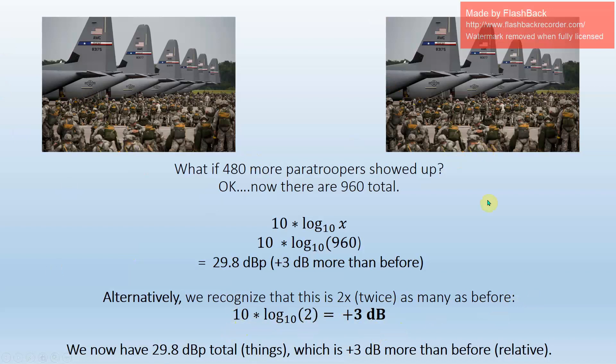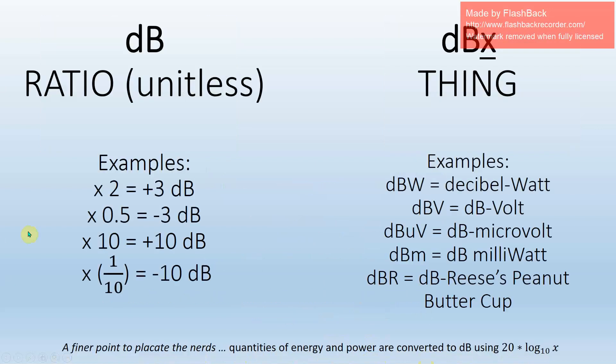So the whole point of this example is to tie together the difference between a dB something and just a dB as a relative number. So we started off with 26.8 dB paratroopers. Now I have 29.8 dB paratroopers—that's 3 dB more than before. So the dBP is a thing. The dB by itself is relative. And any time you double a quantity, you have plus 3 dB. And that's one of those that you'll see come up over and over and over.